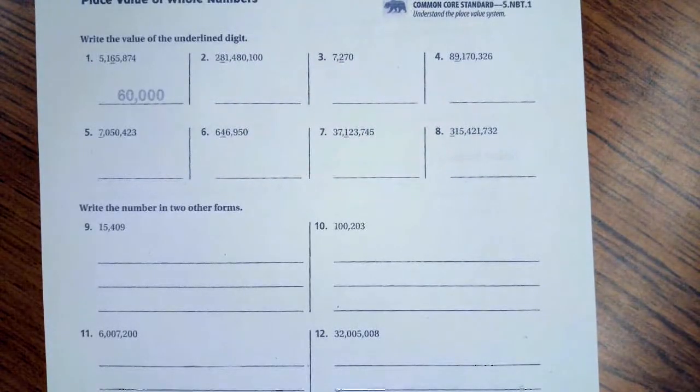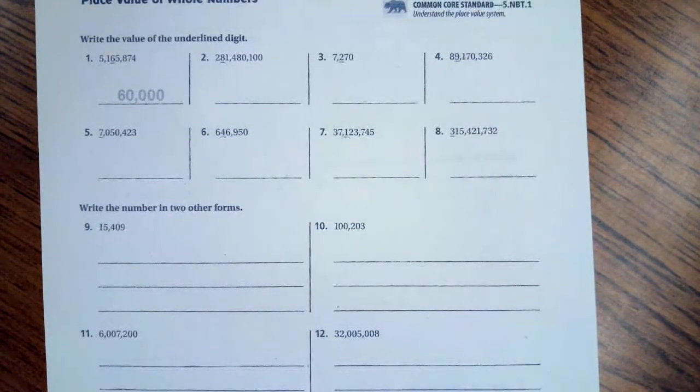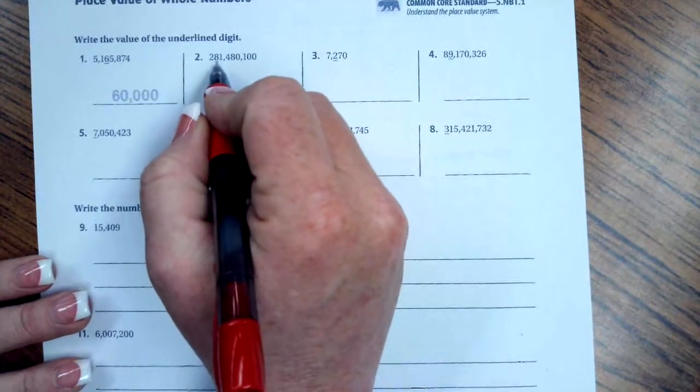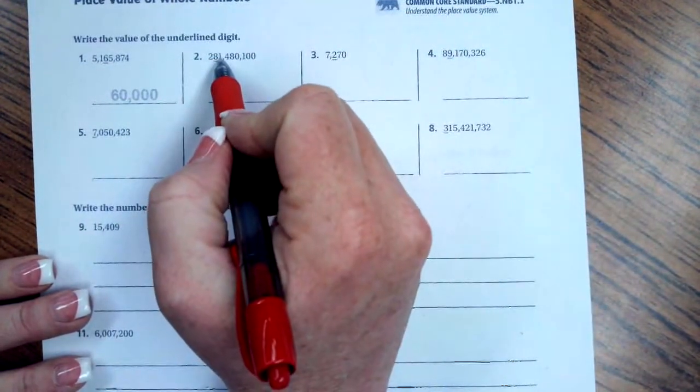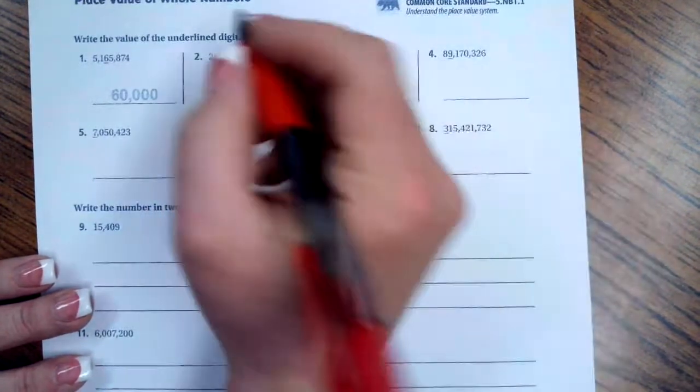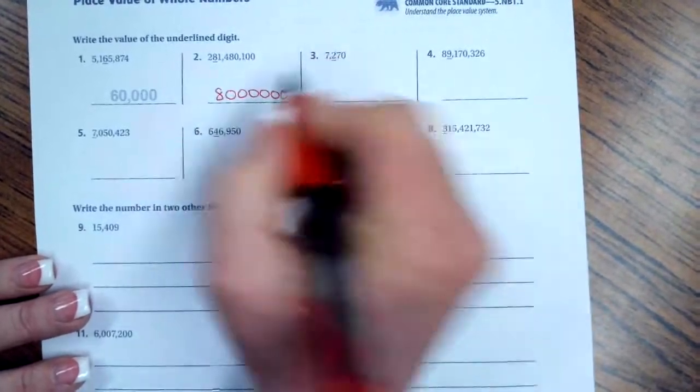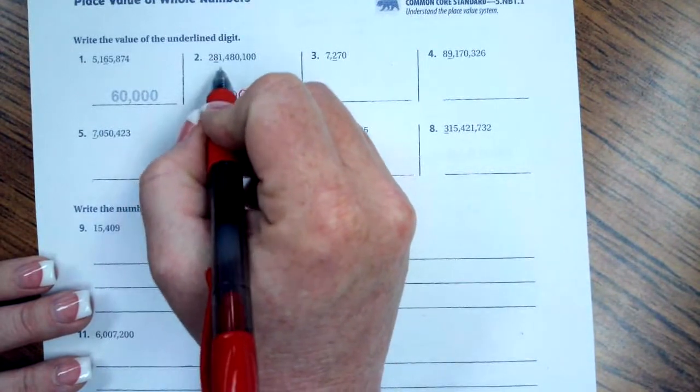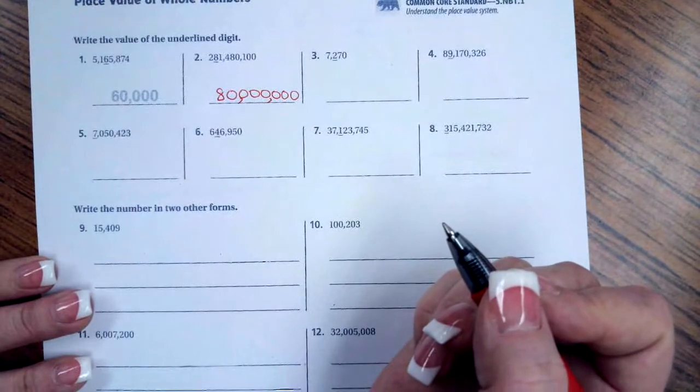Hi guys, welcome to 5th grade, Chapter 1, Lesson 2. We're going to go ahead and get started with number 2. All we're going to do is underline a number for you. We're going to drop that number down, so that number is an 8, and then you're going to count how many places afterwards. So 1, 2, 3, 4, 5, 6, 7, and then you're going to put 1, 2, 3, 4, 5, 6, 7 zeros. You're going to drop down whatever number is underlined and everything after that becomes a 0. That's all you have to do.